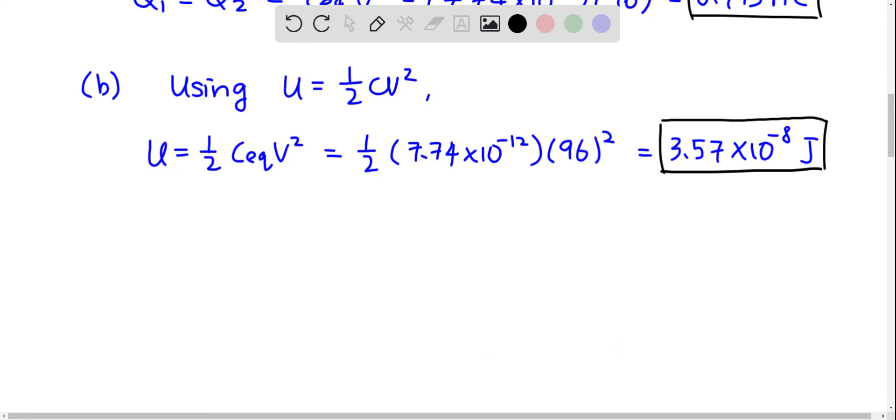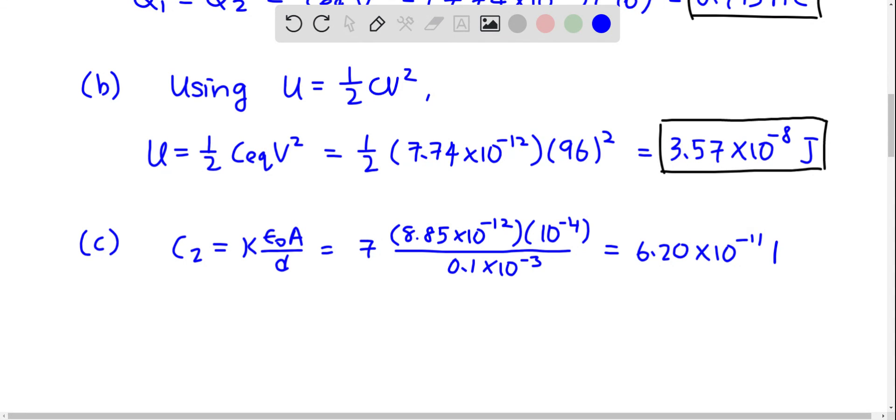In part C, we want to find the electric field between the plates in C2. First we find C2 equals kappa epsilon not A over D. Just put in the numbers, and you get 6.20 times 10 to the negative 11 farad.